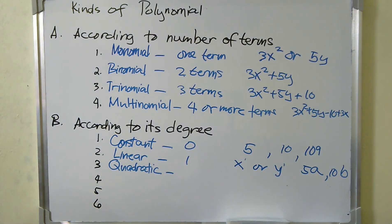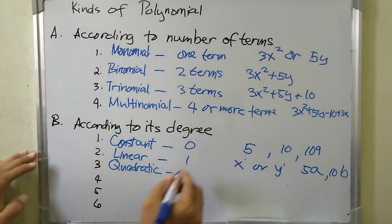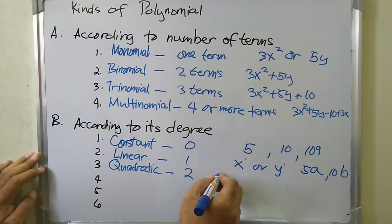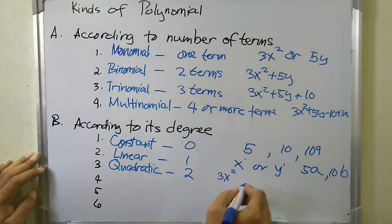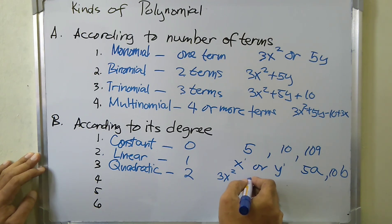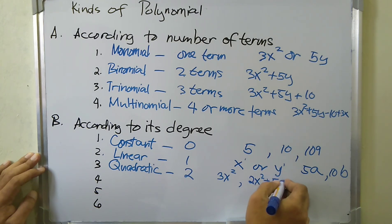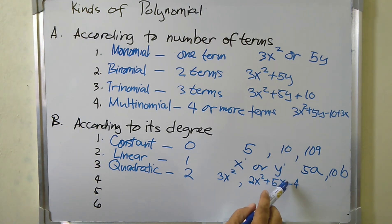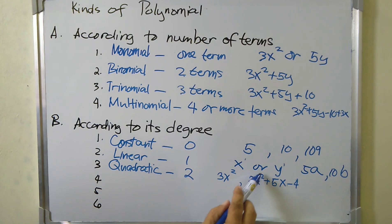A quadratic polynomial is a polynomial of degree two, so the highest exponent is two. For example, we have 3x squared, or a polynomial such as 2x squared plus 5x minus 4. The highest exponent here is two — we have exponents of zero, one, and two — so the highest exponent is two.